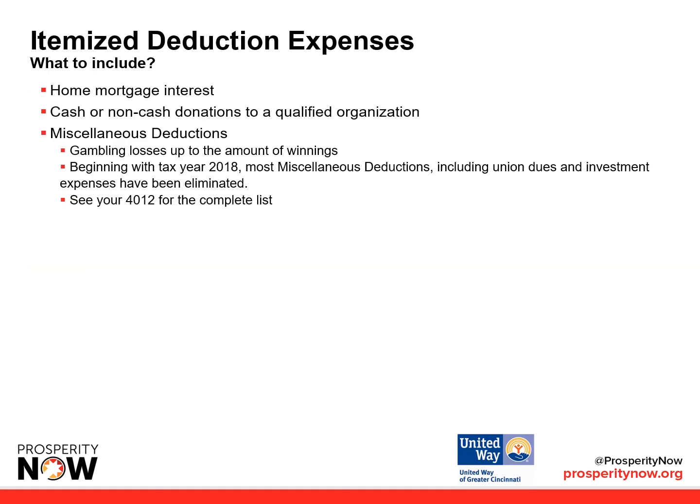You can also include home mortgage interest, cash or non-cash donations to a qualified organization, and miscellaneous deductions — that's gambling losses up to the amount of winnings. Beginning with tax year 2018, most miscellaneous deductions, including union dues and investment expenses, have been eliminated. See your Publication 4012 for the complete list.